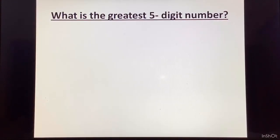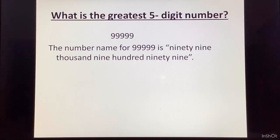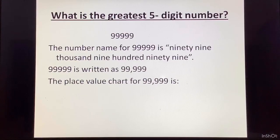Now, what is the greatest five digit number? For this, we will have five nines. The number name for this is 99,999 and we will write it as 99,999. The place value chart for this is ones, tens, hundreds, thousands, ten thousands. Here, all places will be occupied by 9. Have a look.